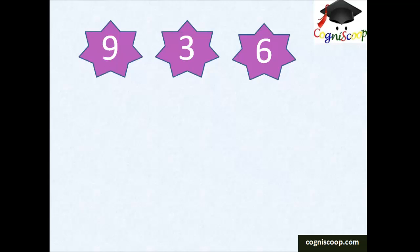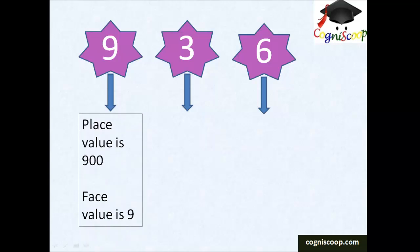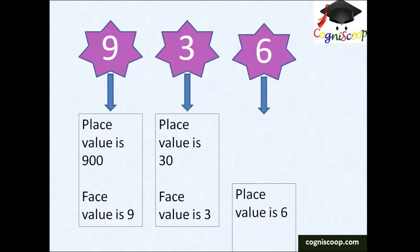In number 936, for 9 the place value is 900 and the face value is 9. For 3, the place value is 30 and the face value is 3. For 6, both the place value and the face value is 6.